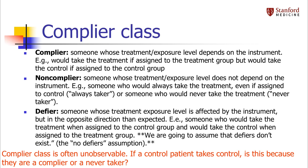A non-complier is not influenced by the instrument. In a randomized trial, this would be someone who would take the control even if they were assigned to the treatment, or someone who would take the treatment even if they were assigned to control. You can call these never-takers and always-takers.